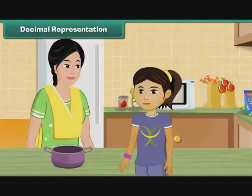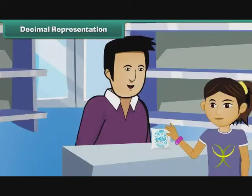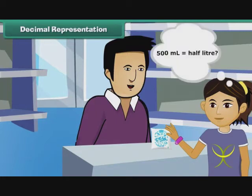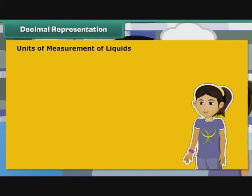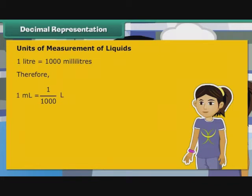Savita's mother asked her to get a half litre milk pouch from Mother Dairy. When she went to buy it, the person at the booth handed her a 500ml pouch. Savita was confused — is 500ml the same as half litre? To answer this question, we must first understand the units used to measure liquids. 1 litre is equal to 1000 millilitres. Therefore, 1 ml is equal to 1 by 1000 litre, that is equal to 0.001 litre.